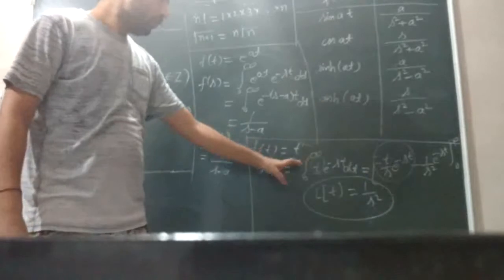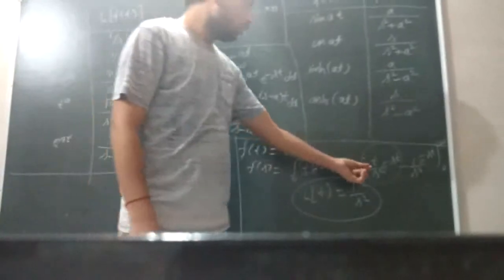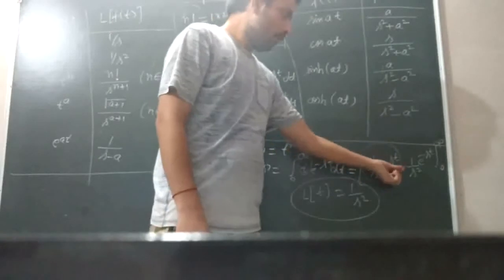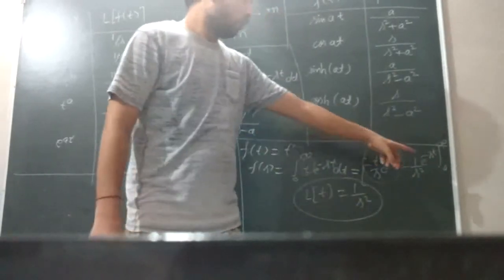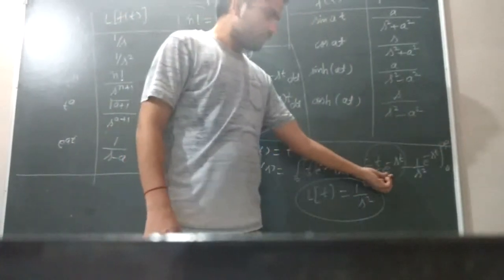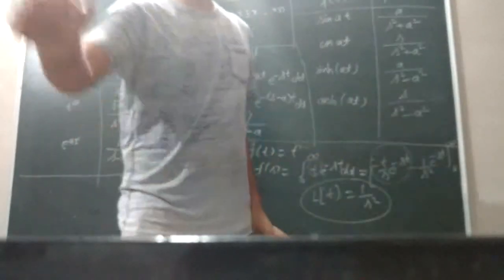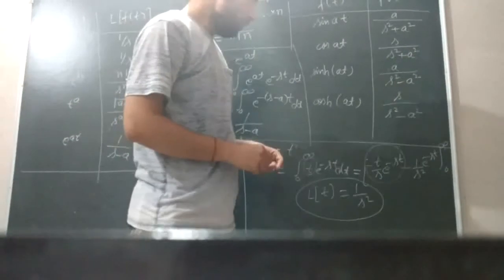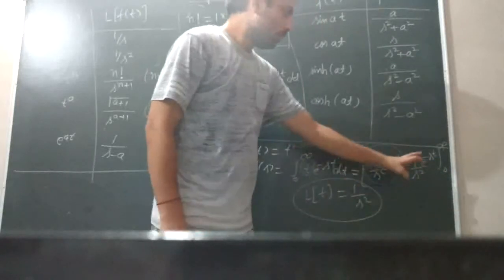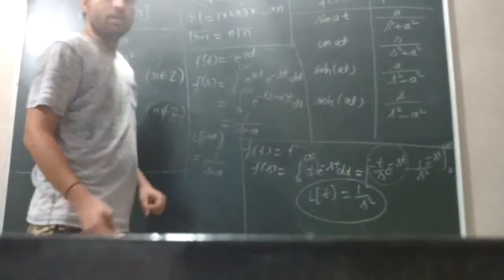So for f(t) equals t, we evaluate the integral from 0 to infinity of t times e to the power minus st dt. Solving by parts gives minus t by s times e to the power minus st, minus 1 by s squared times e to the power minus st, evaluated from 0 to infinity. When you put the infinity limit, the exponential term is 0. When you put the 0 limit, the t-term is also 0. So that first term vanishes, and the remaining term gives 1 by s squared. Therefore, the Laplace transform of t is 1/s².